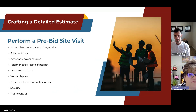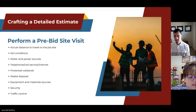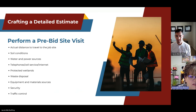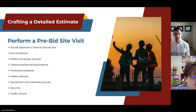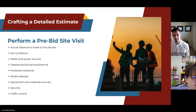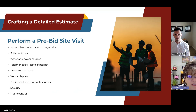You also want to perform a pre-bid site visit to get a look at the land. Make sure you know the actual distance to the travel site, any soil conditions, water and power sources available, cell phone service, protected wetlands, waste disposal considerations, equipment and materials sources, security, and traffic control. Google Maps is a good measuring tool, but an on-hand site visit is strongly recommended.